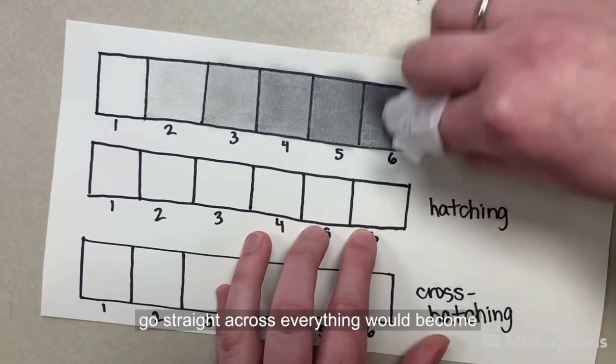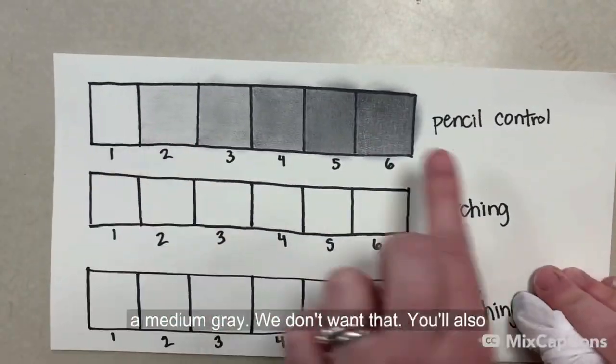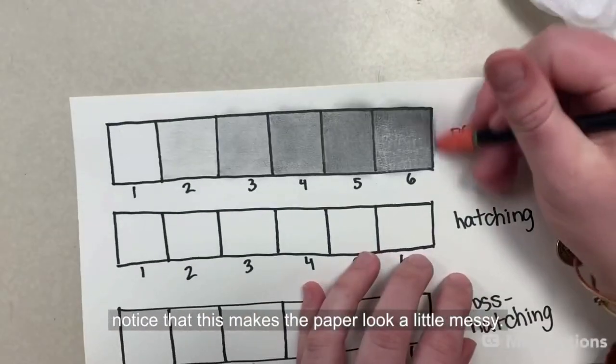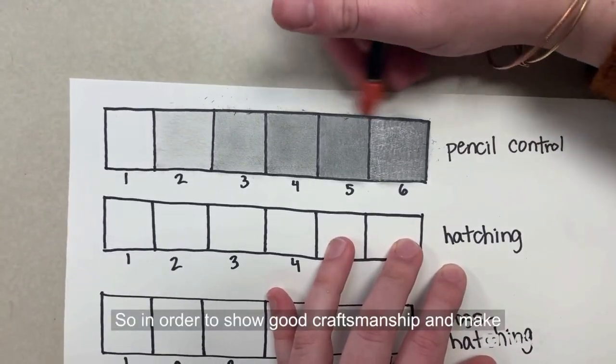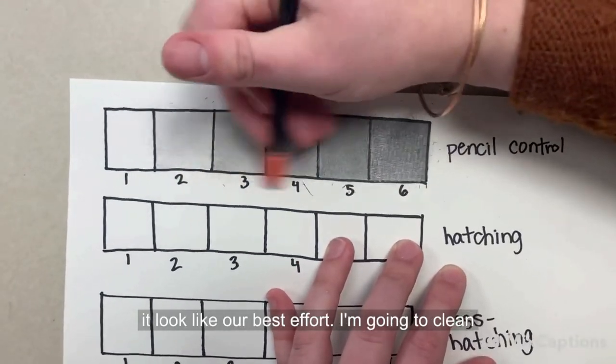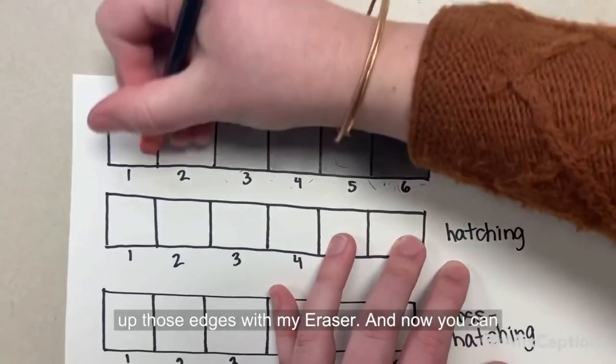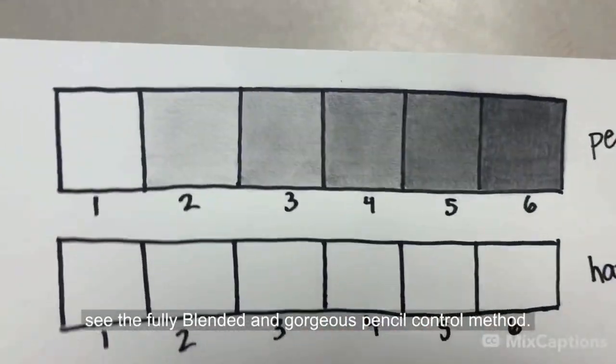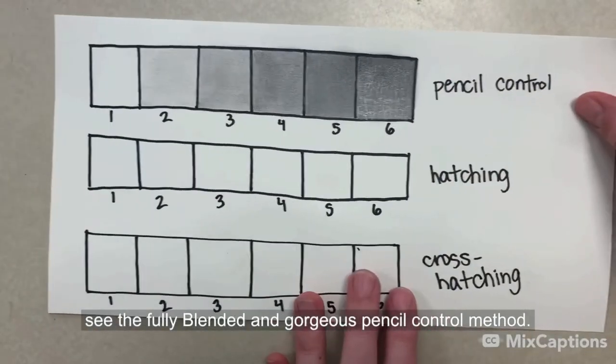Because if I were to go straight across, everything would become a medium gray. We don't want that. You'll also notice that this makes the paper look a little messy. So in order to show good craftsmanship and make it look like our best effort, I'm going to clean up those edges with my eraser. And now you can see the fully blended and gorgeous pencil control method.